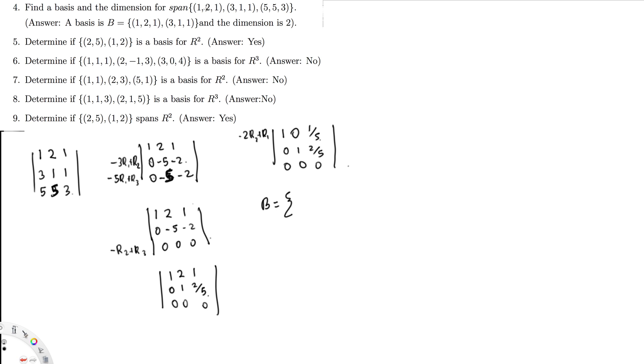Now we can answer this question. The question is asking: find the basis and the dimension of the span. The basis is going to be the first and second rows, because those are the rows that are linearly independent. So the basis is {(1, 2, 1), (3, 1, 1)}. And the dimension is based on the linearly independent vectors — we have two linearly independent vectors, so the dimension is equal to 2.